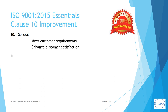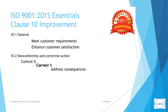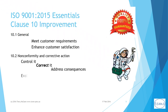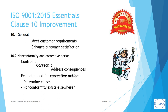10.2 non-conformity and corrective action structures the activities required of an organization when a non-conformity occurs, whether in design and development, production, or post-delivery. Firstly: control it, correct it, and address the consequences. Then evaluate the need for corrective action by determining the causes and whether the non-conformity could exist or occur elsewhere. Note that the standard does not require corrective action in every instance of a non-conformity, but it does require doing the due diligence to make a responsible determination as to whether corrective action is appropriate.